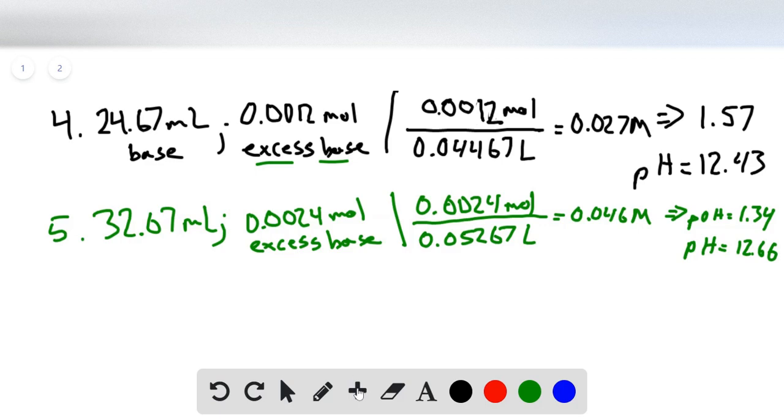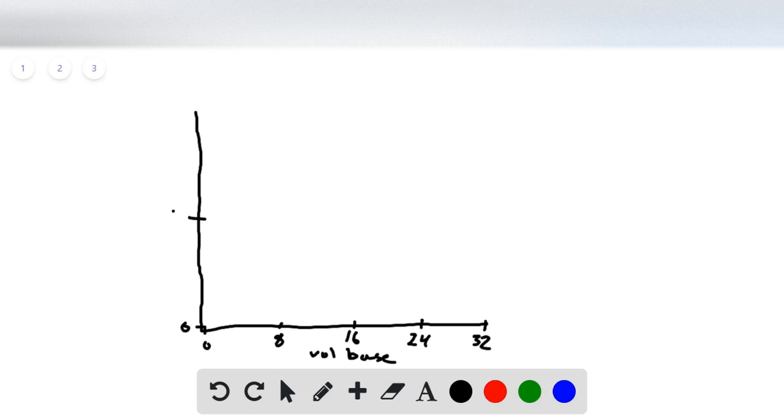Now what's left is to draw our plot. I'll open a new page to try to do this as well as I can. On the x-axis we'll look at volume of added base. From our problems we go up to about 32, so we'll put 16 in the middle.